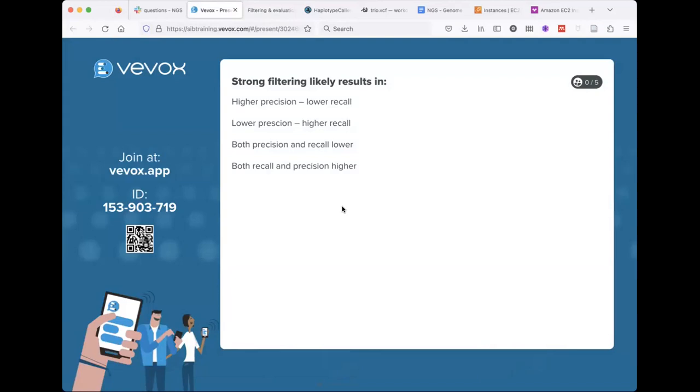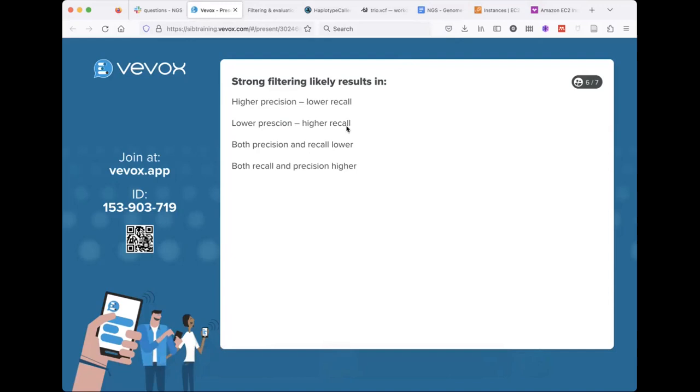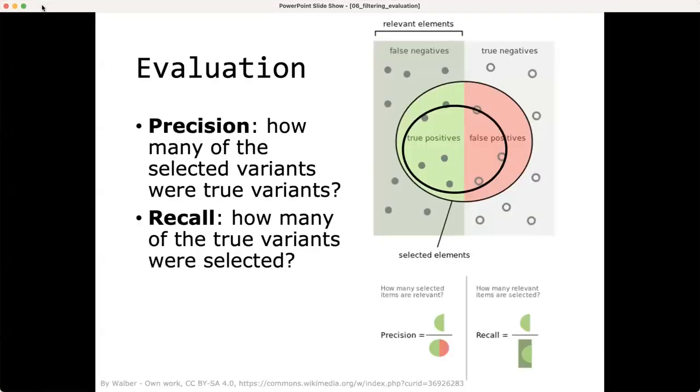So let's say we are going to apply very strong filtering. So we are going to remove relatively a lot of variants. So what will we end up with? So where will we gain mostly? Do we get a high precision, low recall, low precision, high recall, and so on. So as a reminder, I can share my screen. There's a PowerPoint slide. There we go. So precision is how many of the selected variants were true variants, and recall how many of the true variants were selected.